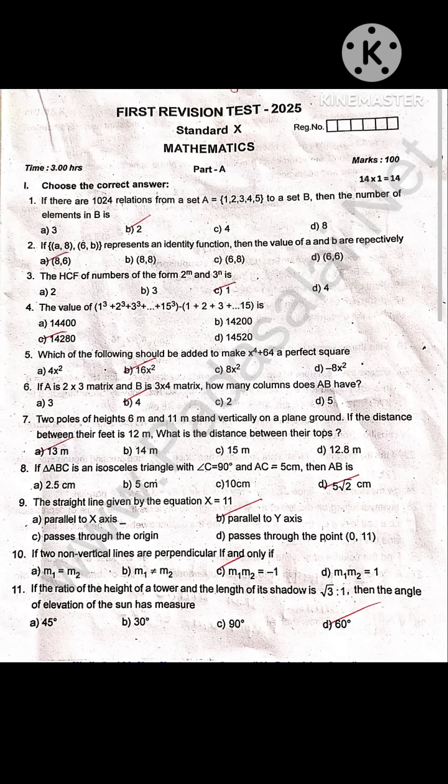The value of 1 cube plus 2 cube plus 3 cube up to 15 cube minus 1 plus 2 plus 3 up to 15 is 14,280.